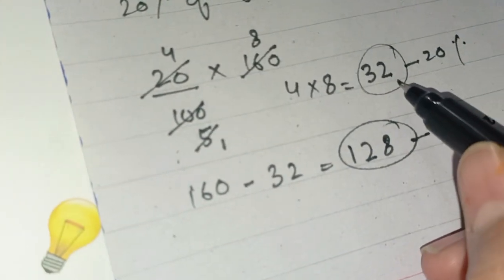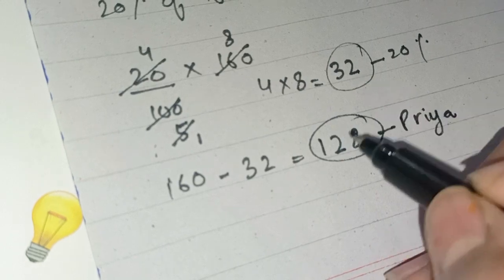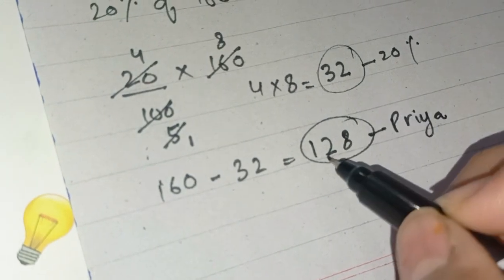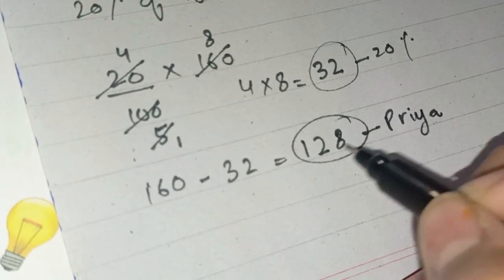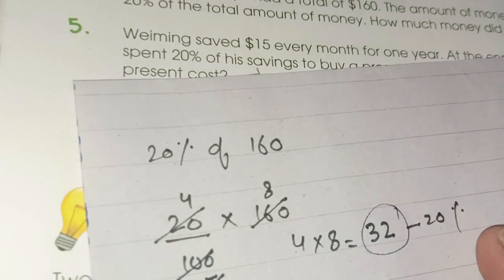So $32 is Milling's amount and $128 is Priya's amount.